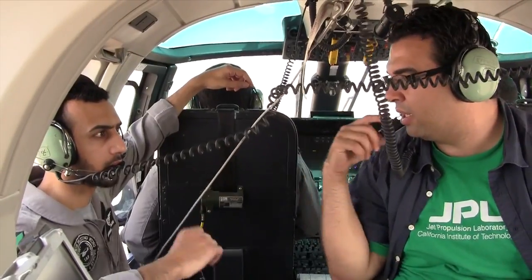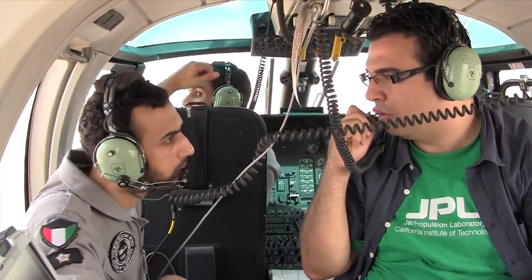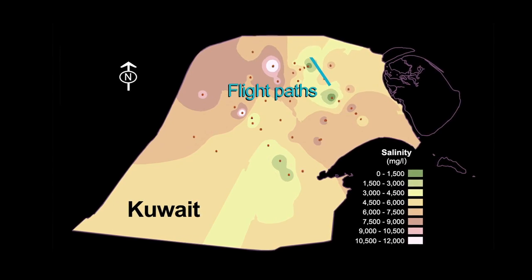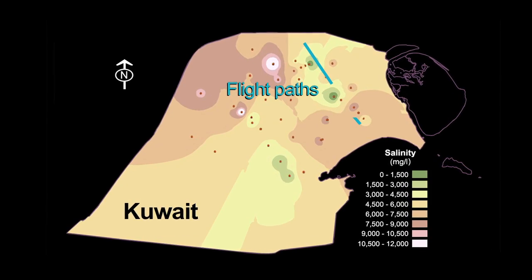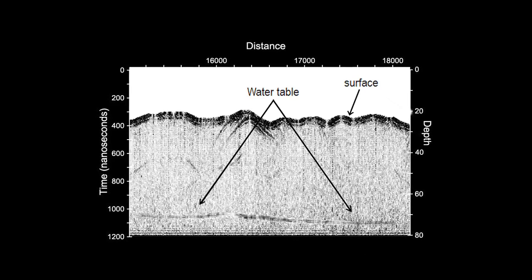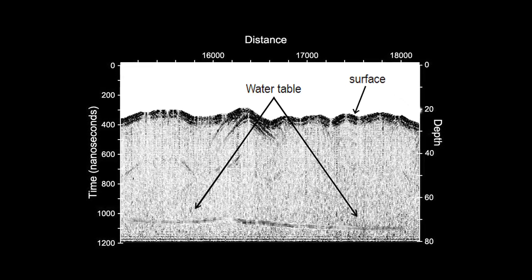We're able to map the depth of the water table — the depth at which water changes in the subsurface. We're able to see recharge locations. We're able to see discharge locations. We're able to prove that, yes, we can use that radar technology we used on Mars to map water on earth on a large scale.